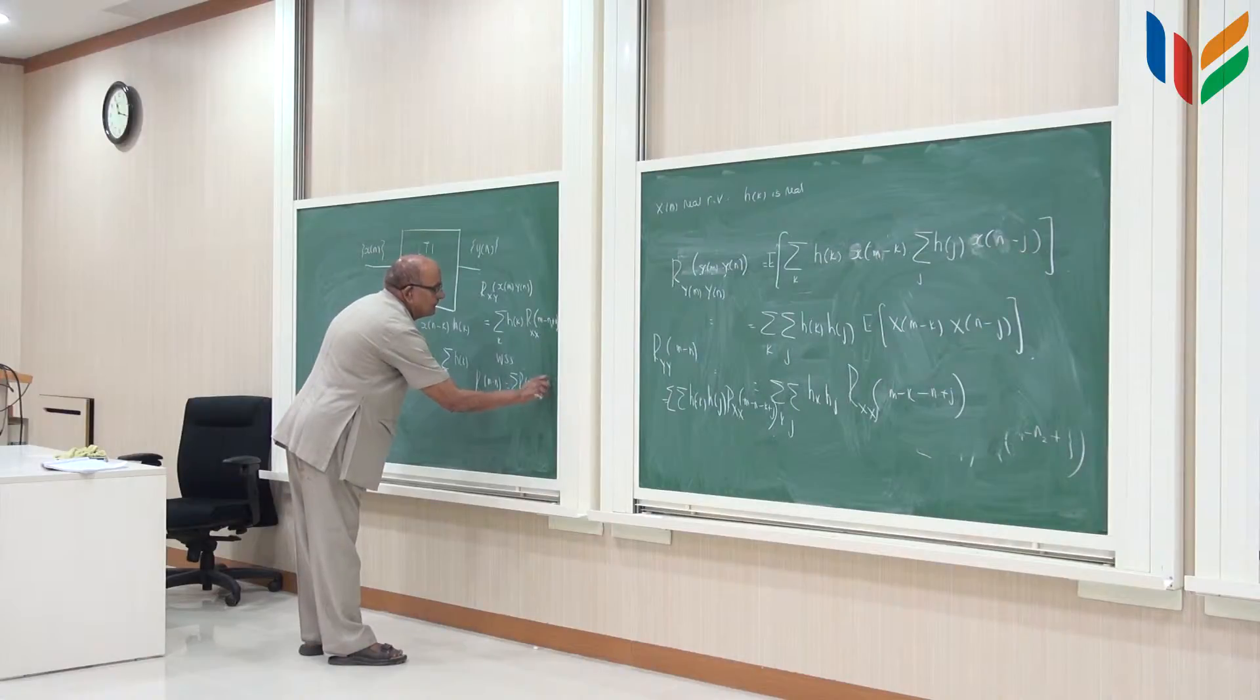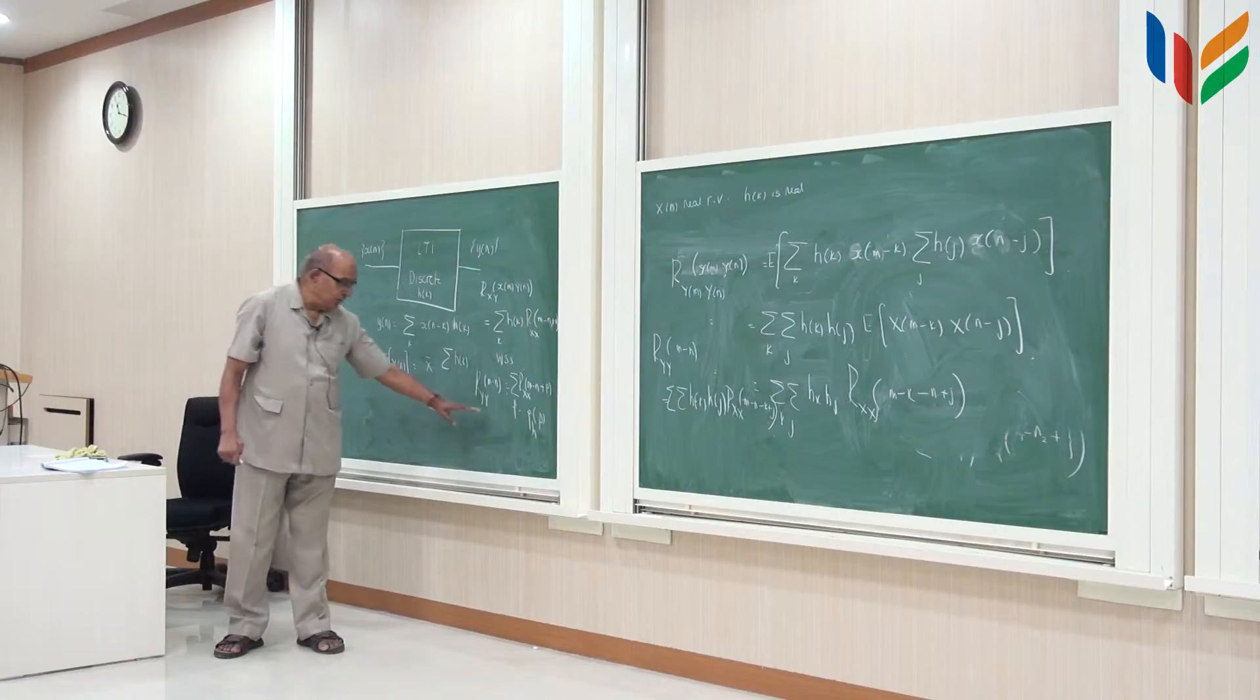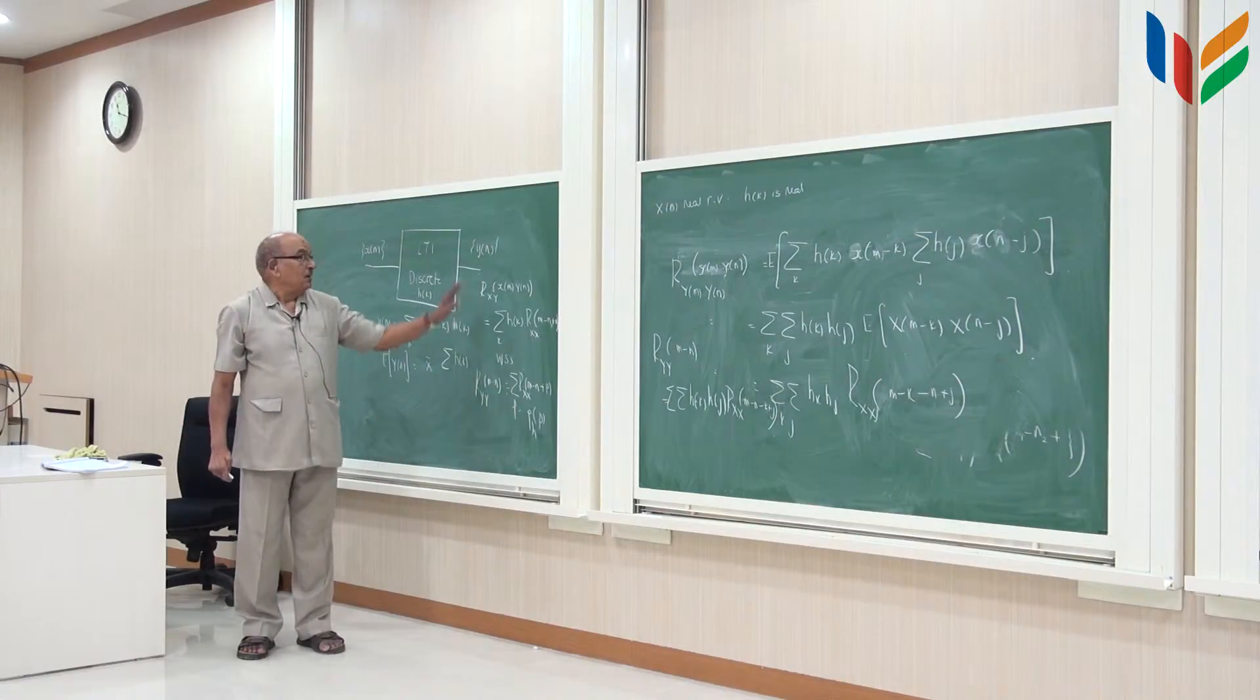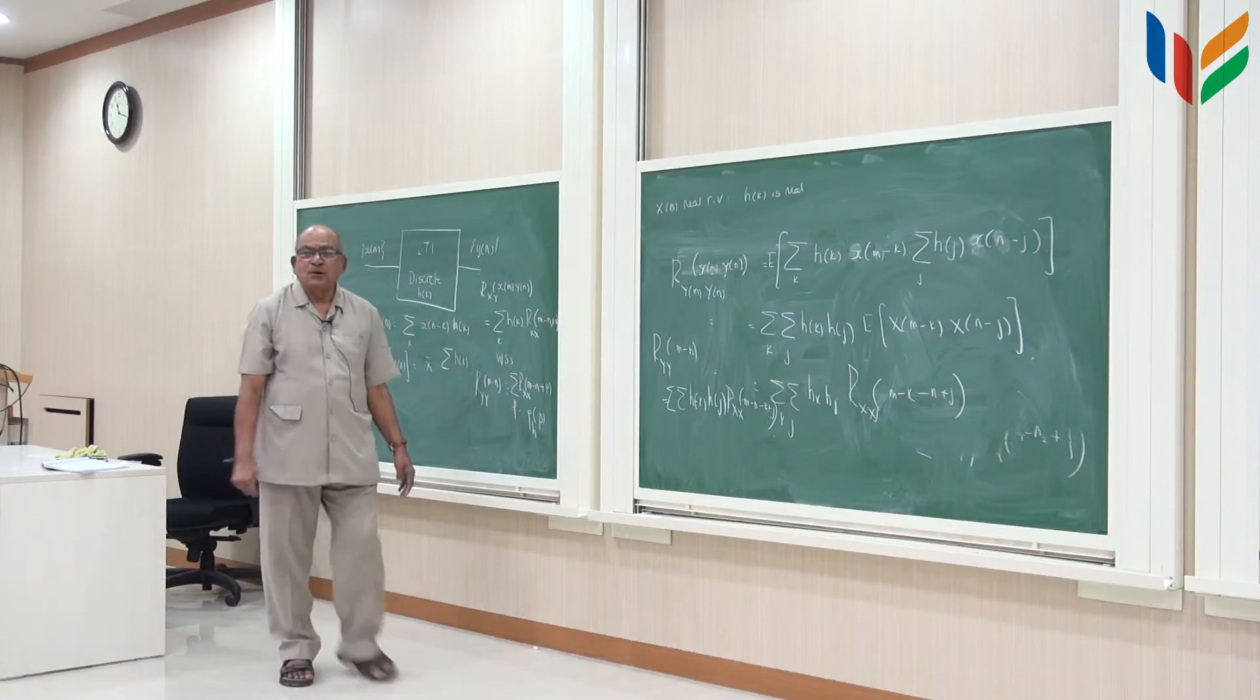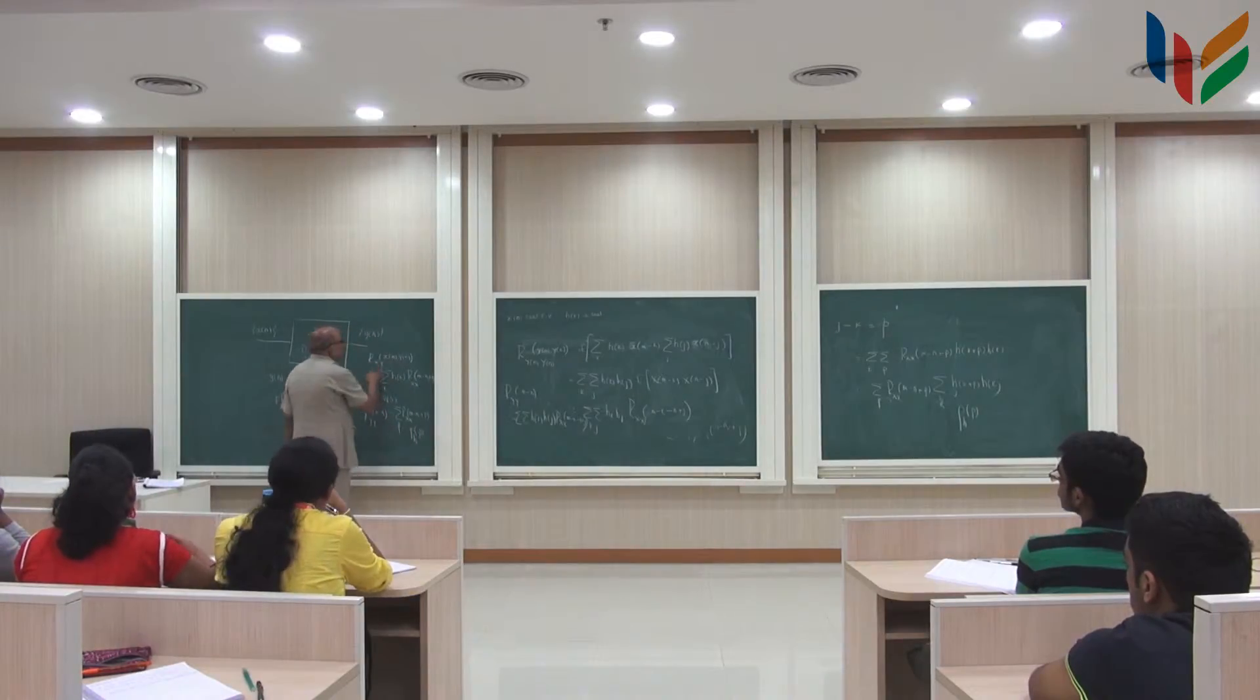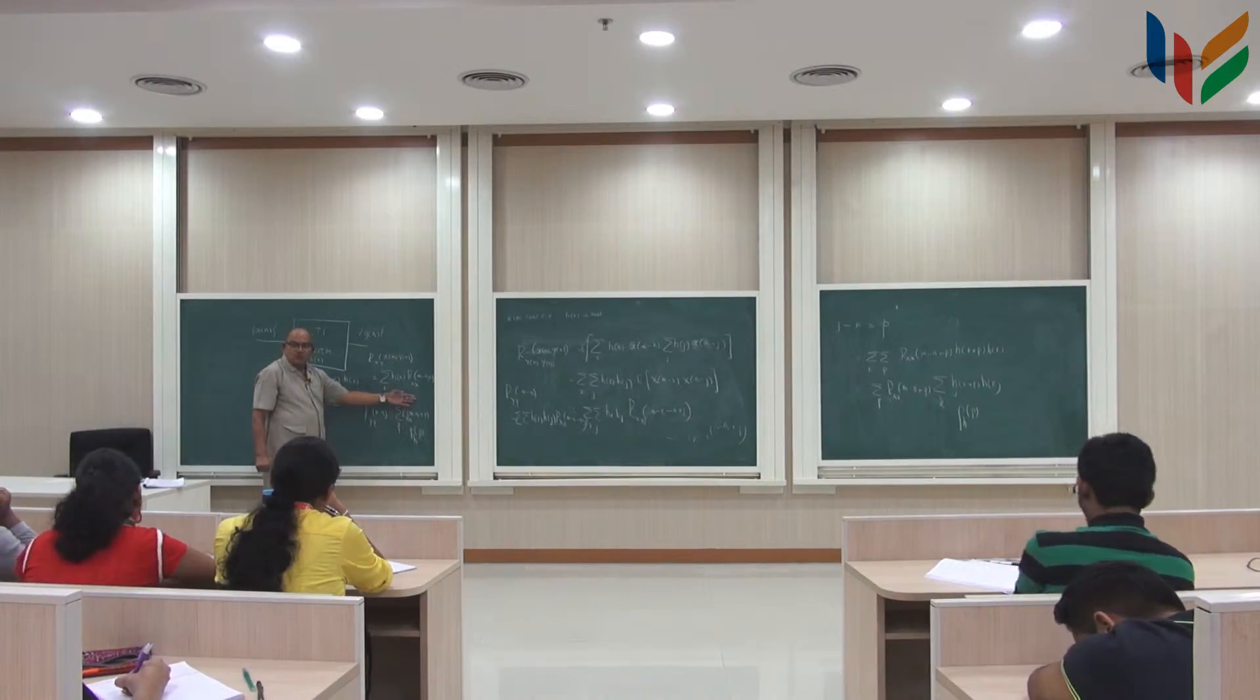So here we go. So this is the autocorrelation function of the output random variables, two random variables separated at a distance equal to m minus n, in terms of the correlation function of the input random variables, assuming the input random variables are wide-sense stationary. This is the cross correlation between x and y of two random variables separated by distance m minus n in a wide-sense stationary scenario comes out to be equal to this m minus n.